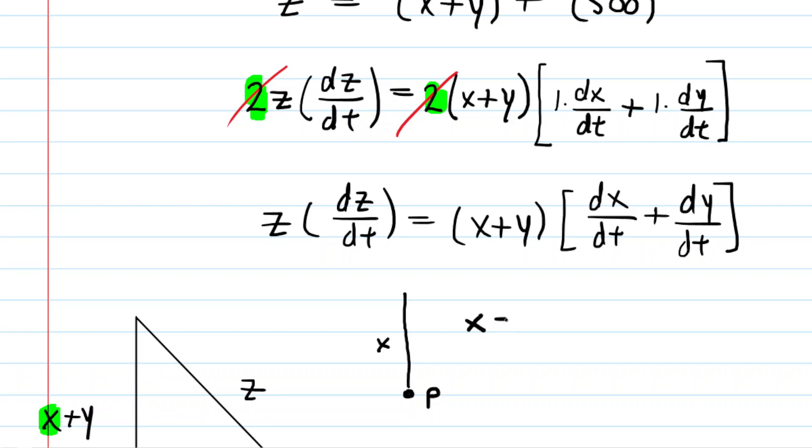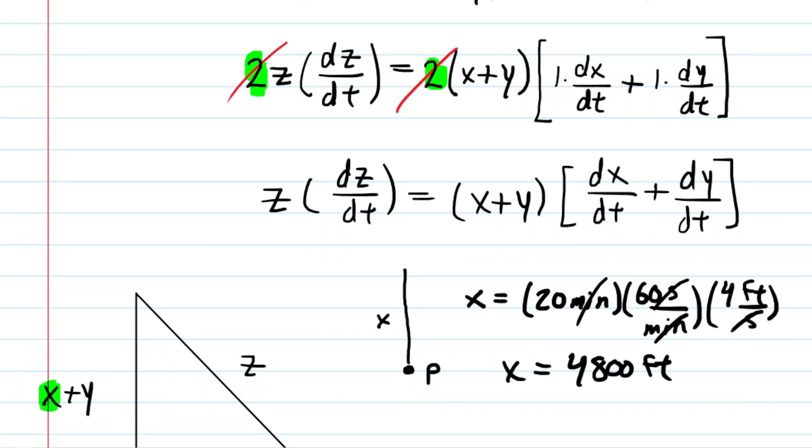So what we can do is as follows. We can say that the distance X would be the 20 minutes. Now we're going to want to convert that into seconds, so of course we could just multiply by 60 seconds per minute. That way these minutes cancel, and we did that because the man was walking at a rate of 4 feet per second. So we multiply by that rate, and then the seconds cancel, and then you're left with feet. So you can see that X turns out to be 4,800 feet. So that's the distance that the man has walked.